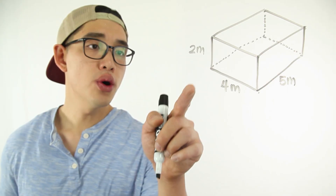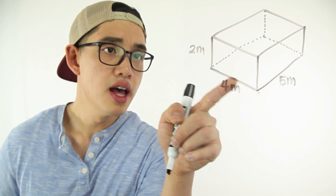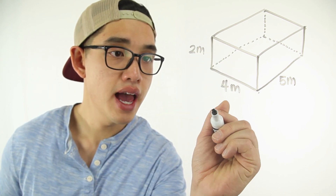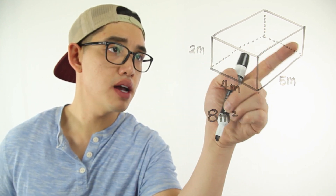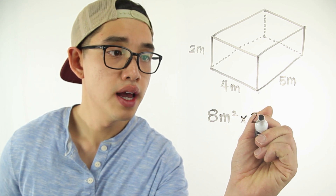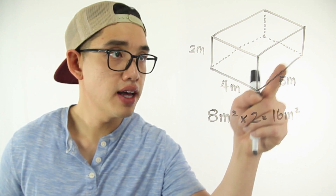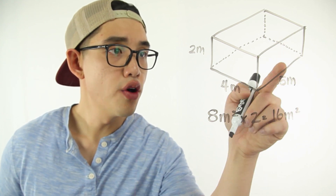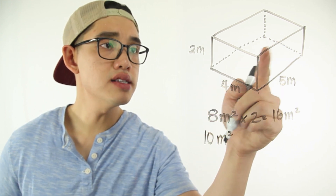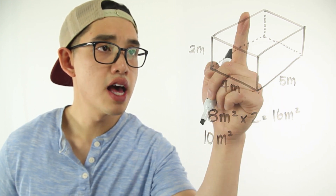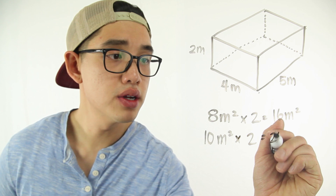Let's get to it. If I calculate this one side right here, this is going to be two times four, and that's going to give me eight meters squared. And since this side is the same as this back side, I can multiply it by two, and that's going to give me 16 meters squared. Over here, this is five and the height is two, so five times two gives me 10 square meters for this side. And since this side is the same as that side, I can multiply it by two, which gives me 20 meters squared.